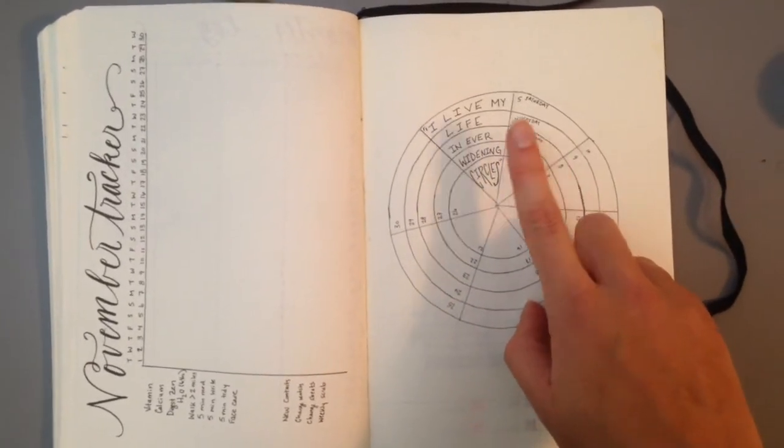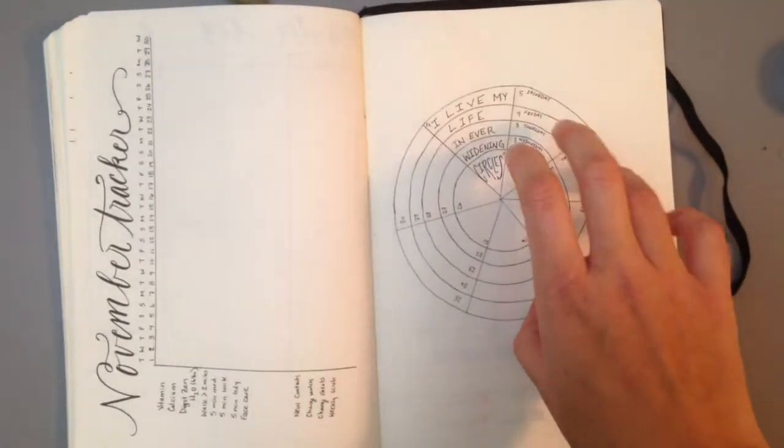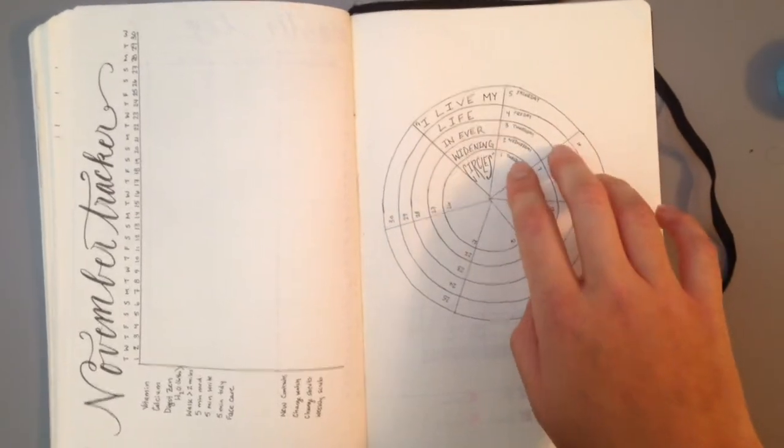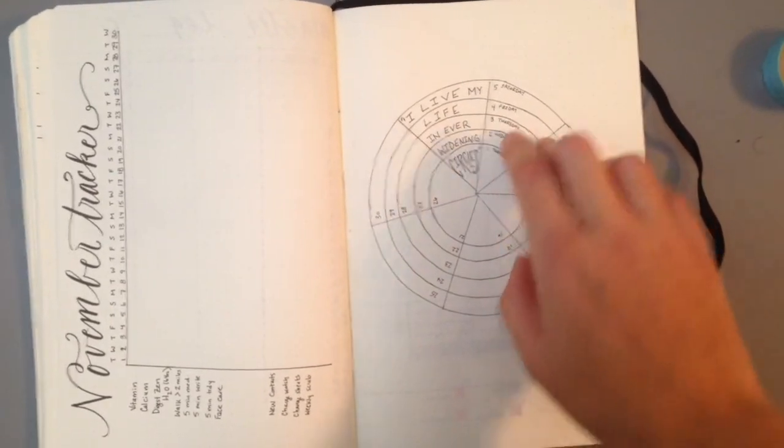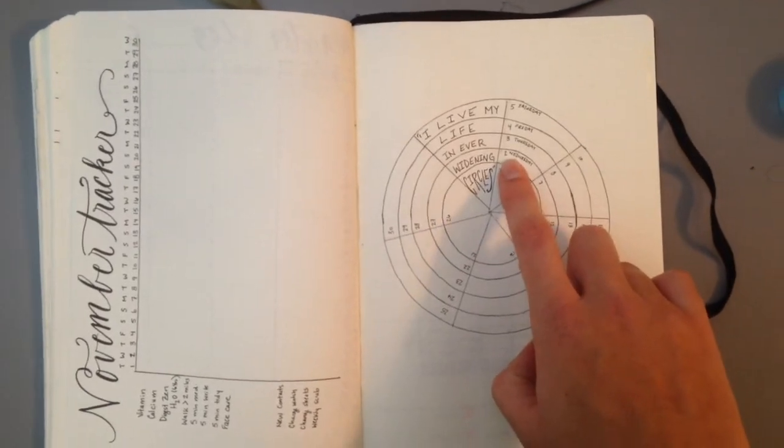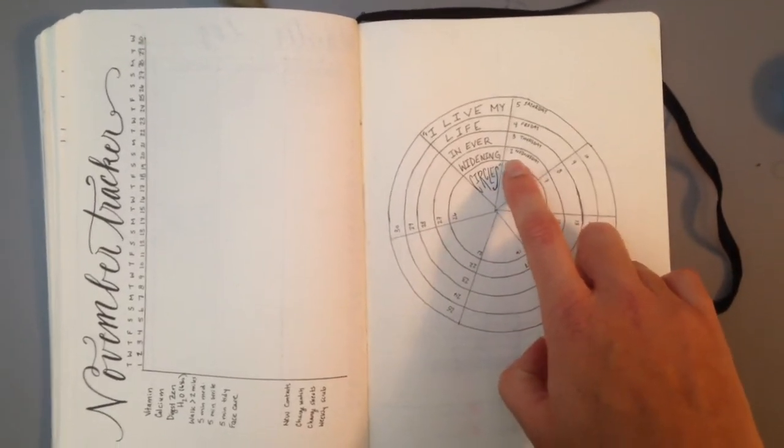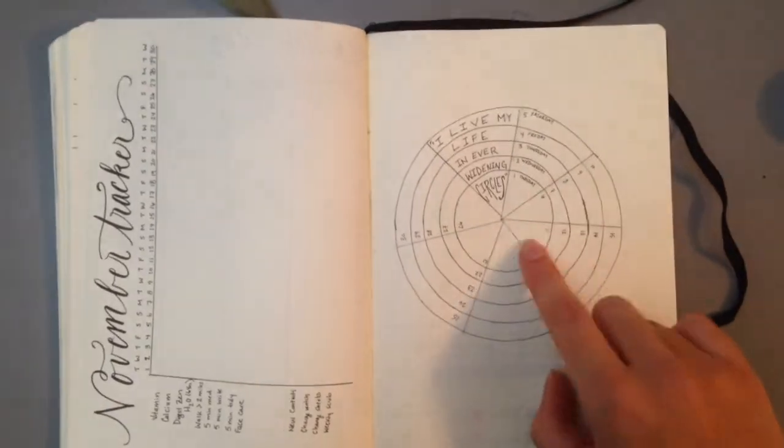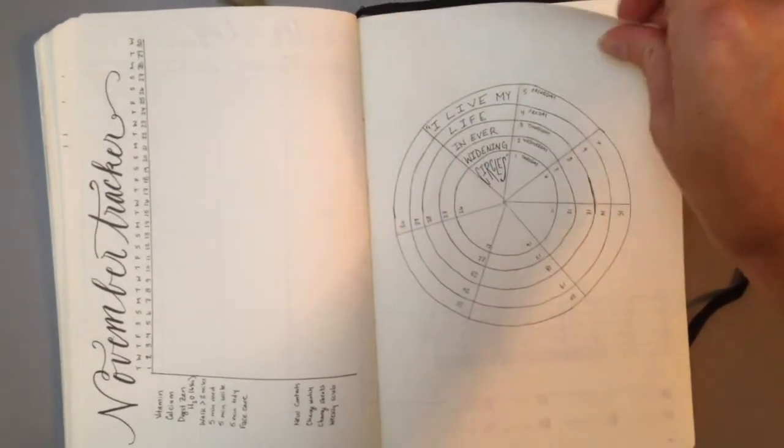Especially since I'm using an Ultra Micro Uniball Signo Pen. It's a .38 millimeter tip. So I can definitely get multiple items in each of these segments. That is a new take on that.